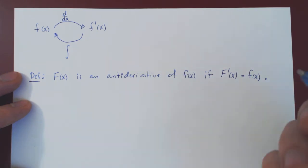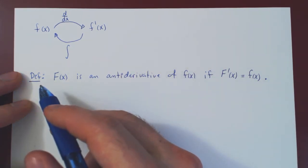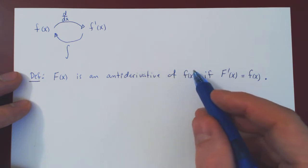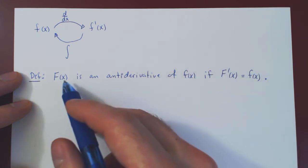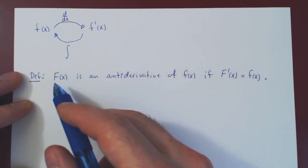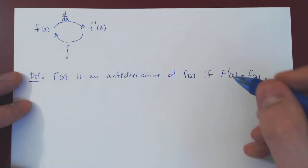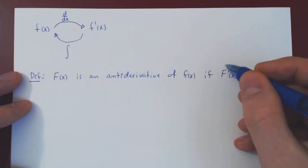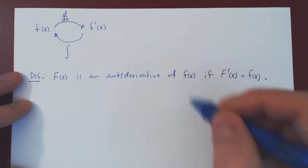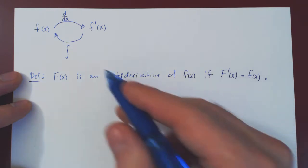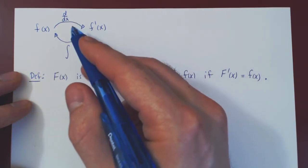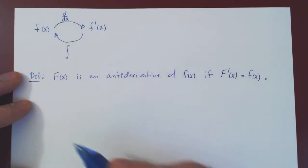The question we're going to look at in Integral Calculus is: given the function f, can we find a function uppercase F of x such that the derivative of uppercase F is the original function lowercase f — therefore going backwards with respect to differentiation?